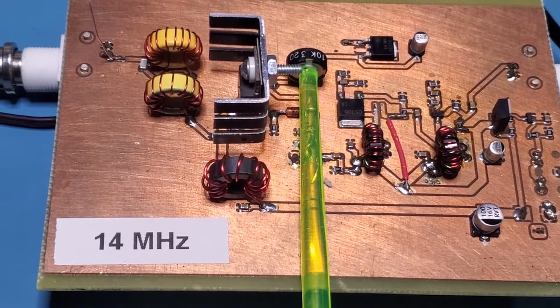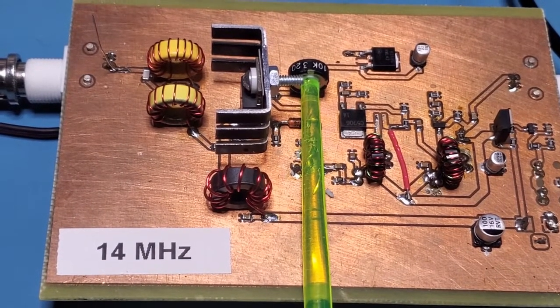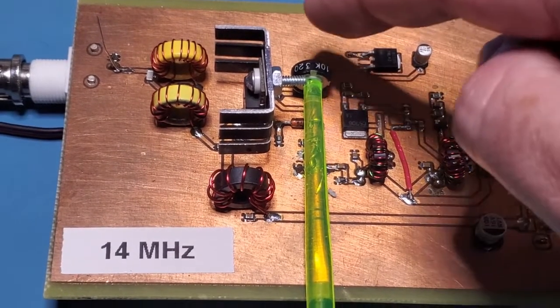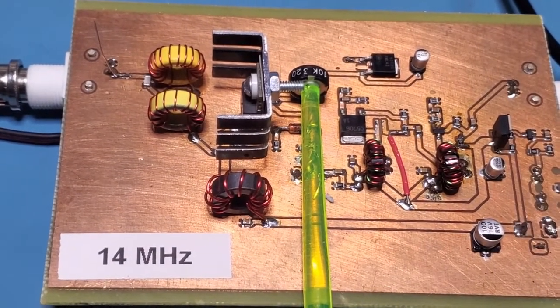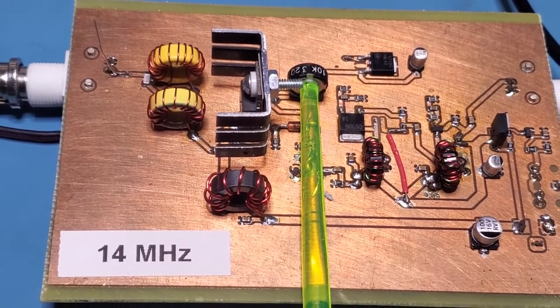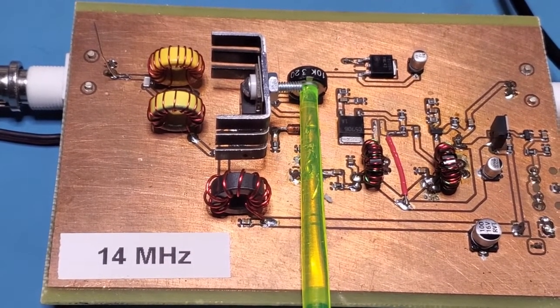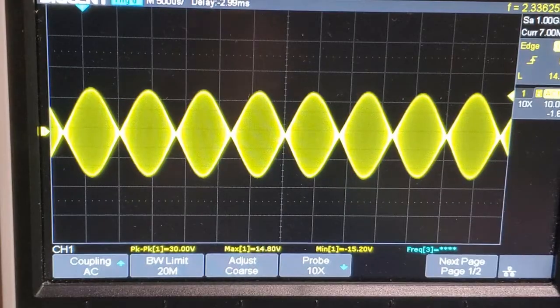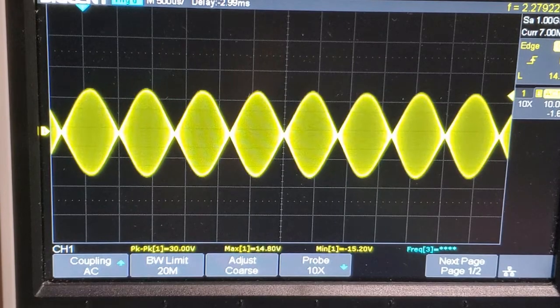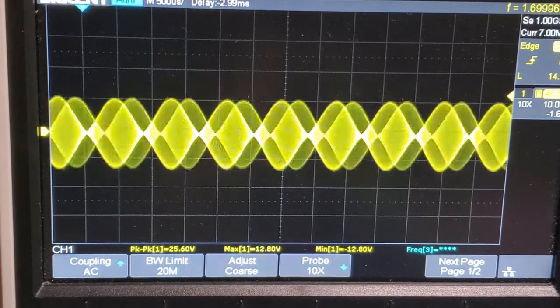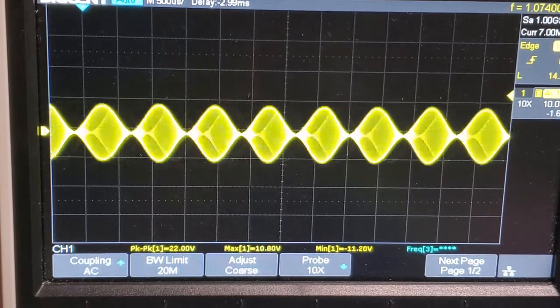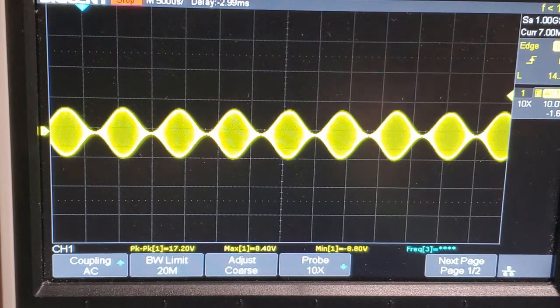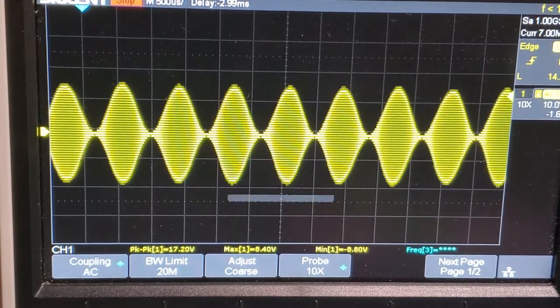So let's have a look now at the effect of adjusting the bias to the gate of that IRF510. I've got my little adjusting tool in that pot there, and we'll see the effect first of reducing the gate bias and the effect it has on the two-tone signal. Let's start with that two-tone signal from before, and I'll slowly reduce the gate bias. As I reduce that gate bias, let me just pause it here.